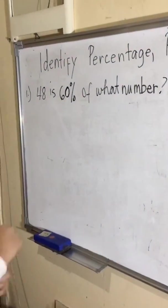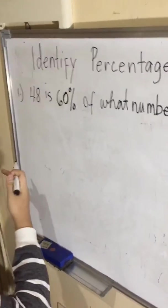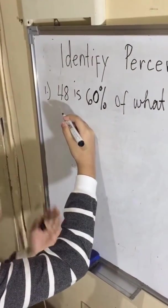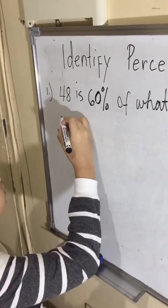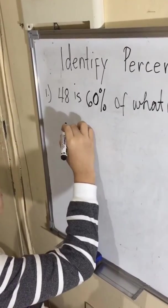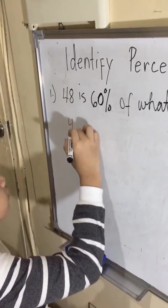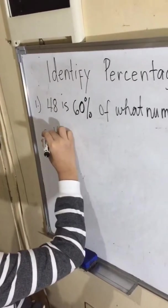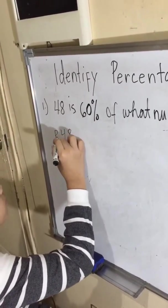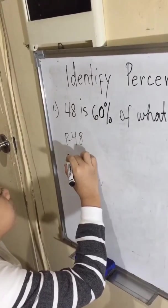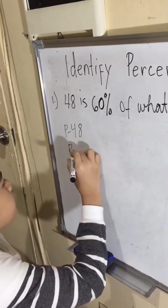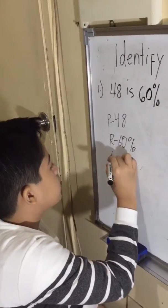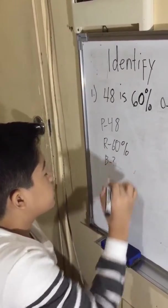Now here, we need to first find what 48 and 60 are to find the base, which is the number that you need to find. So 48 would be percentage, 60% would be the rate, and base is still unknown.